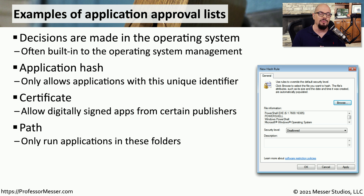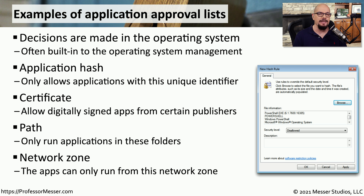Malicious software often installs itself into different places on a storage device, so you may be able to tell your operating system to only run software if it happens to be installed in a particular folder. If you limit the permissions to those folders, you can effectively create a trusted area of the storage drive. You can also set a policy that would allow or disallow an application to run based on the zone it is executing from.